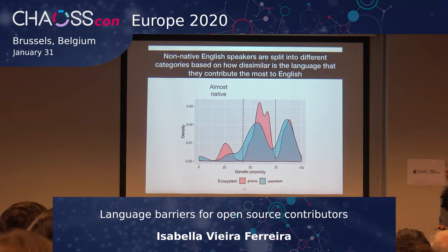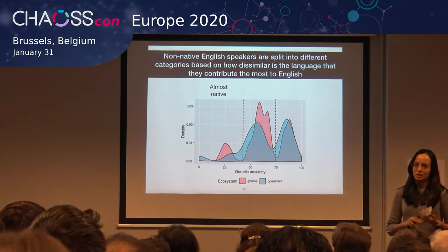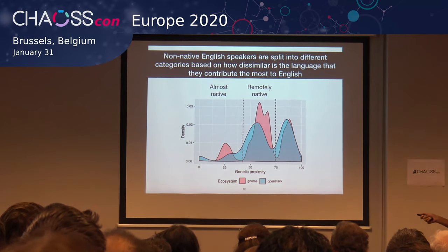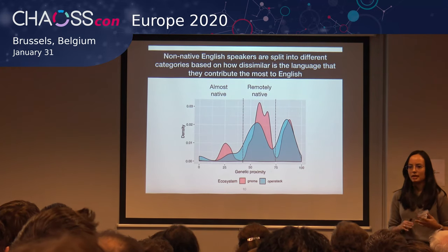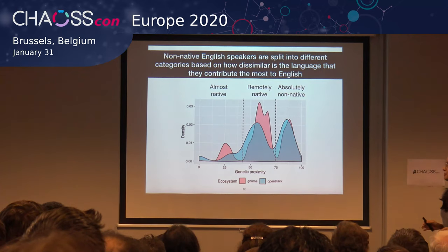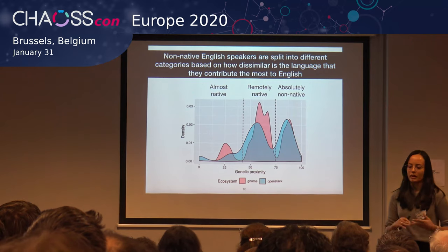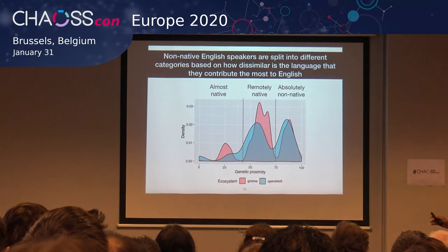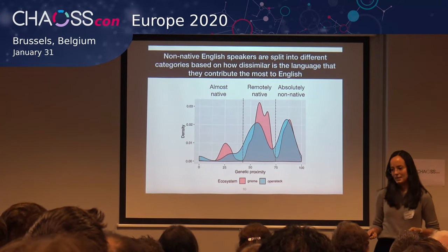Almost native speakers contribute mostly to languages close to English — in other words, German, Dutch, and similar languages. Then we have remotely native speakers, basically romance languages like French, Spanish, and Portuguese. And we have absolutely non-native speakers, who speak Chinese, Hebrew, or Hindi. So as a result we have four different groups: native, almost native, remotely native, and absolutely non-native speakers. We want to see how easy it is for people in those categories to go from translation to code development.